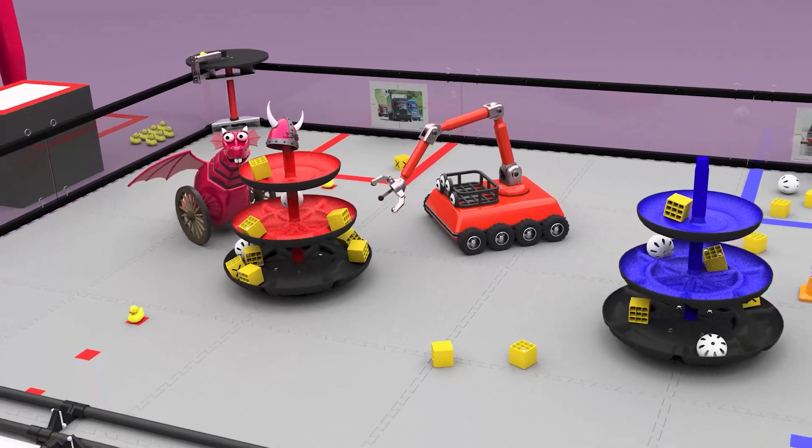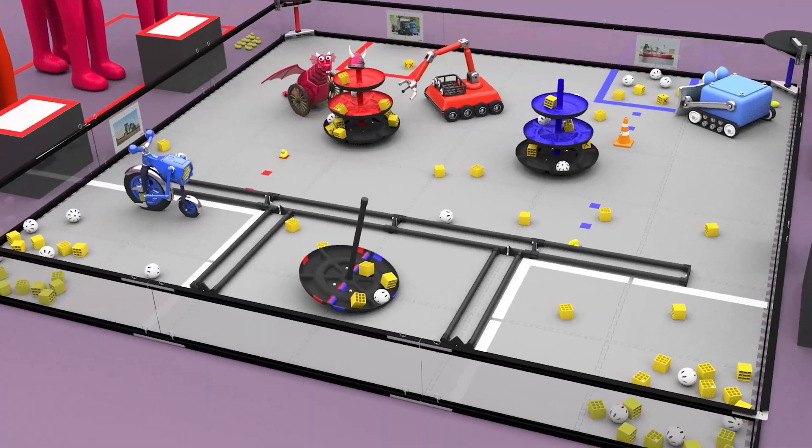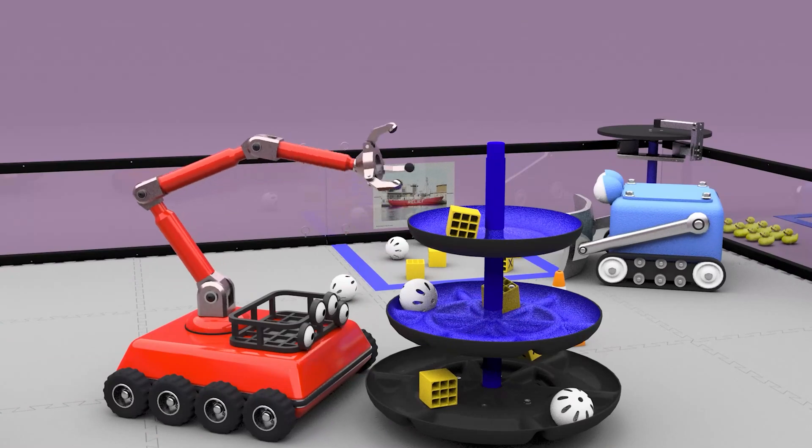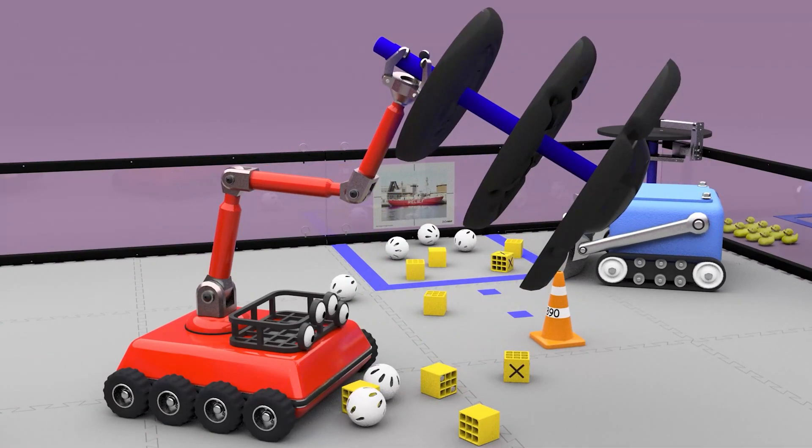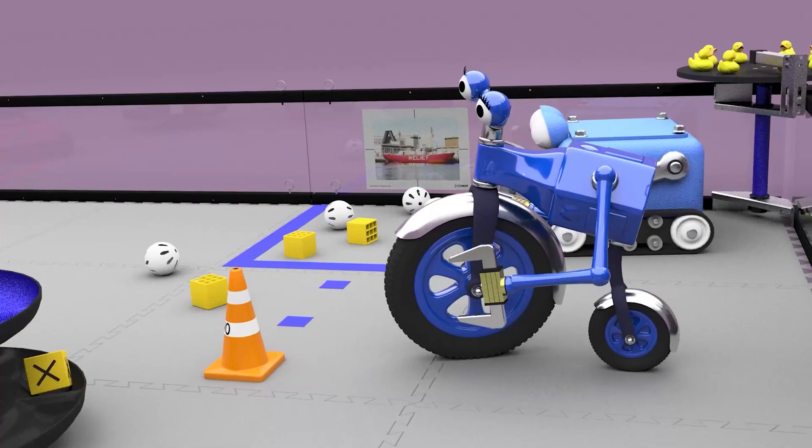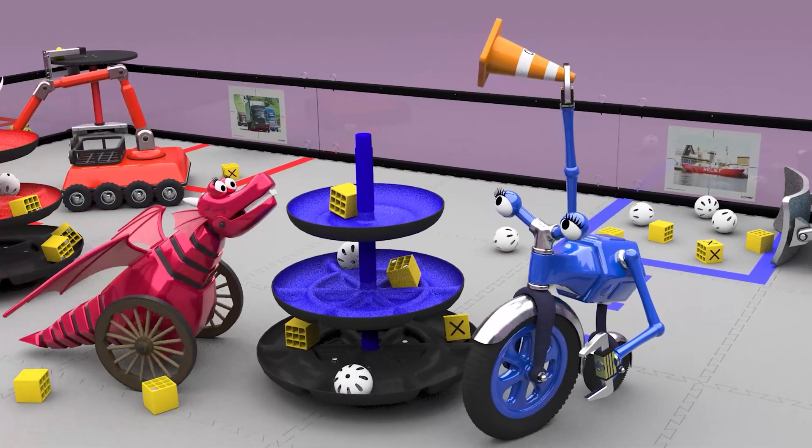There are many ways to score in Freight Frenzy, but there are also rules that if not followed will deduct points from your alliance. For example, robots cannot interfere or interact with the opposing alliance shipping hub. Scoring elements may not be launched. Robots may not interfere with their opposing alliance's capping attempts.